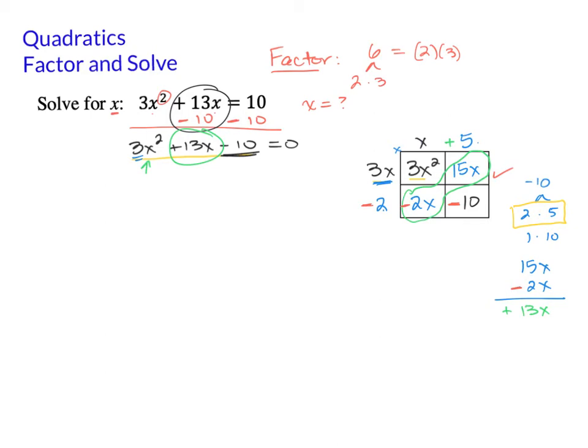So once we've written the box, we can write these as factors. 3x minus 2 times x plus 5. And remember, equals 0. So this equation and this equation are the same exact thing. It's just rewritten. This is standard form, and this is factored form.